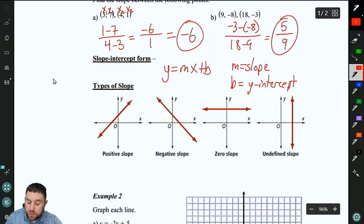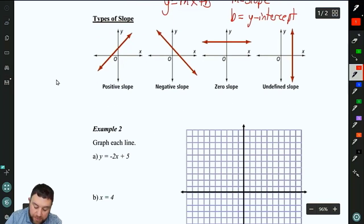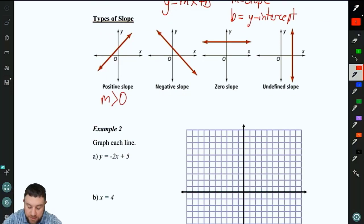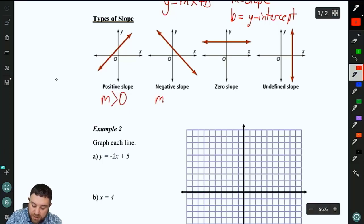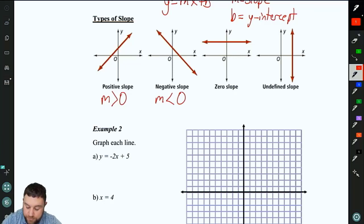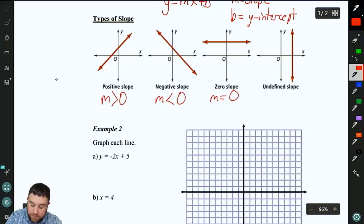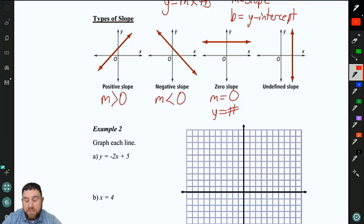And we have four types of slope when we're dealing with lines. We have a positive slope where m is greater than 0. And that means from left to right, our line is going up. We have a negative slope where m is less than 0. So from left to right, we're going down. We have 0 slope where m equals 0. And this is always y equals a number. These equations don't have an x in them at all.